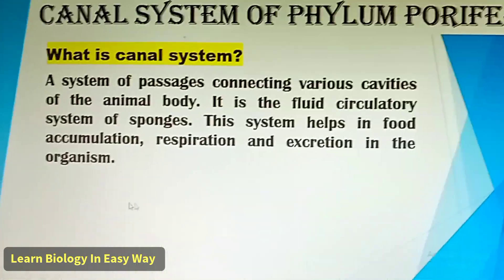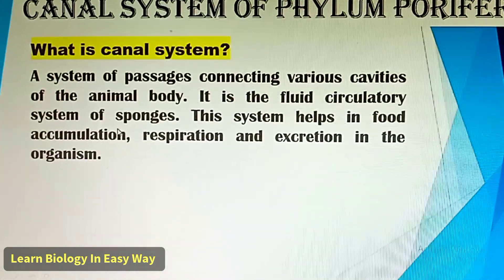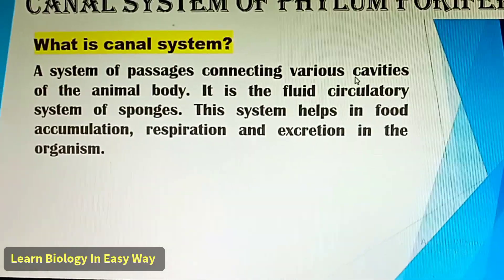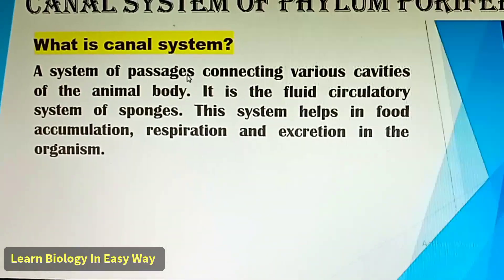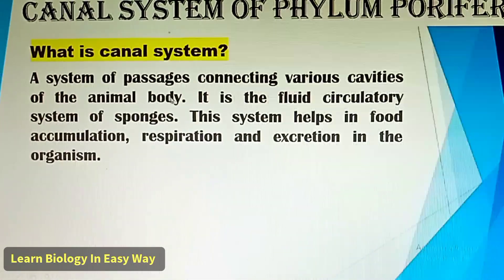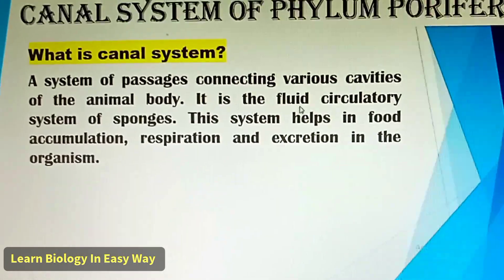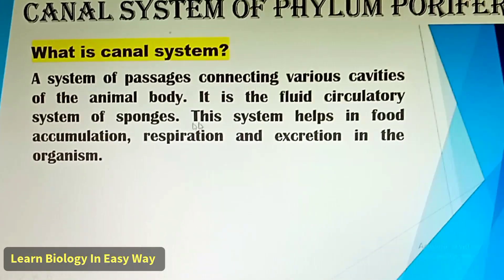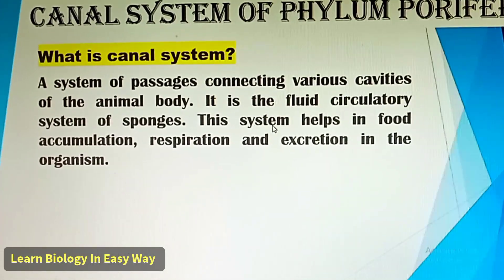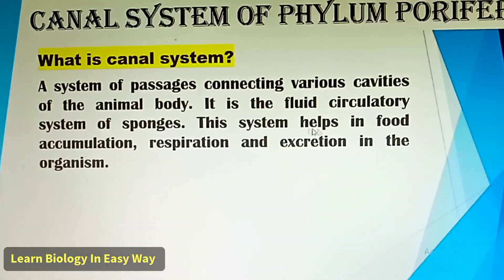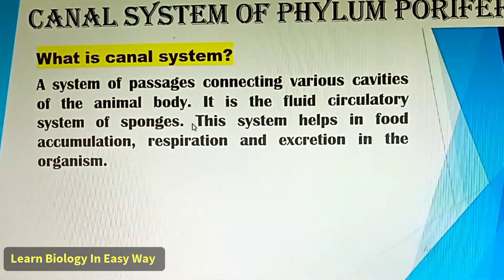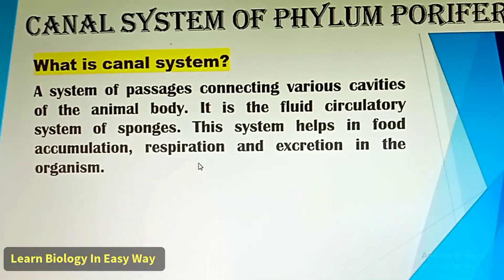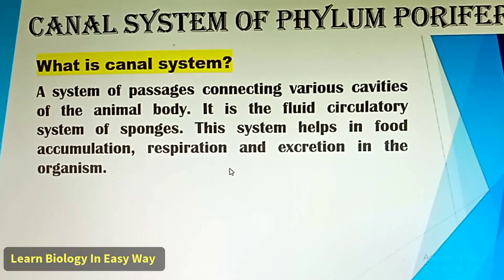What is canal system? A system of passages connecting various cavities of the animal body. It is the fluid circulatory system of sponges. This system helps in food accumulation, respiration and excretion in the organism.